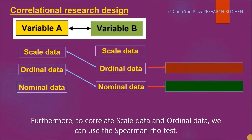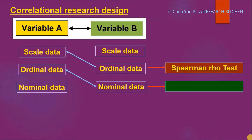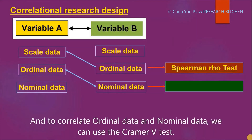Furthermore, to correlate scale data and ordinal data, we can use the Spearman rank test. And to correlate ordinal data and nominal data, we use the Cramer's V test.